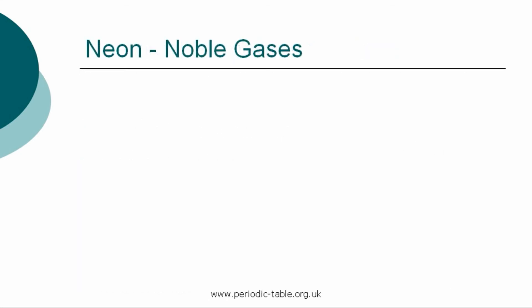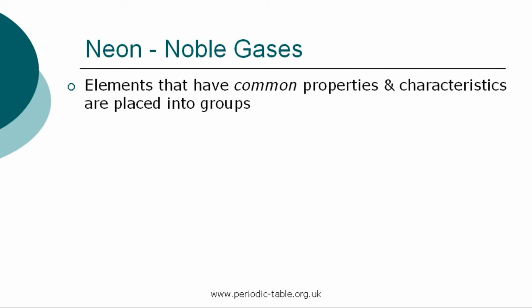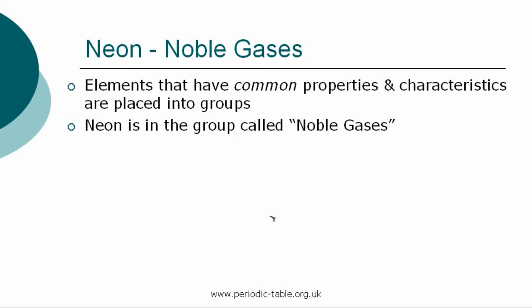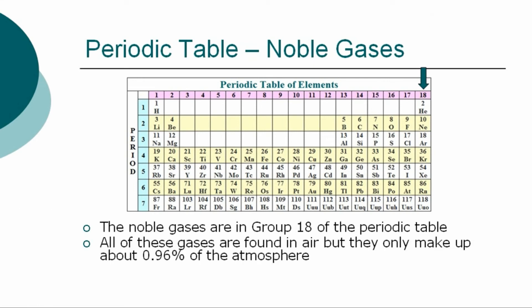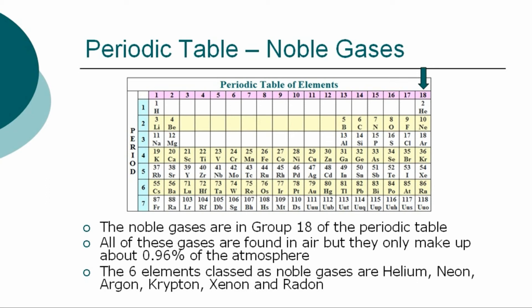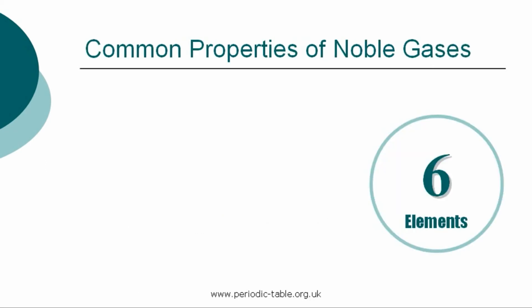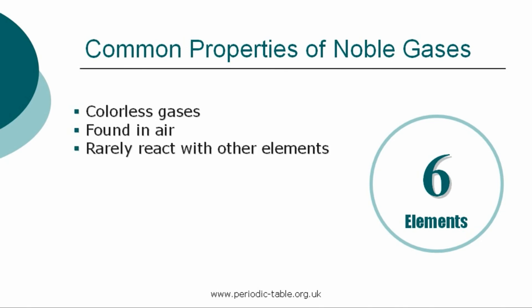Once the properties of an individual element have been identified, it is placed into a group of elements which have common properties and characteristics. Neon is in the group called the noble gases. The six elements classified as noble gases, or inert gases, are in group 18 of the periodic table: helium, neon, argon, krypton, xenon, and radon. All of these gases are colorless, found in air, and make up around 0.96% of the atmosphere. They almost never react with other elements and do not readily form compounds.